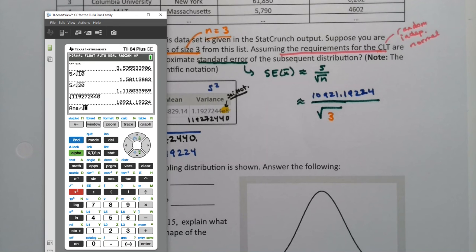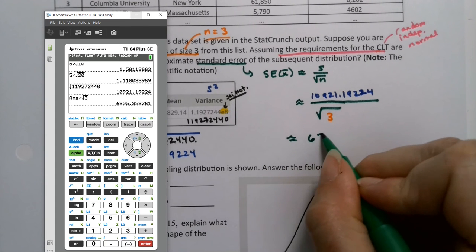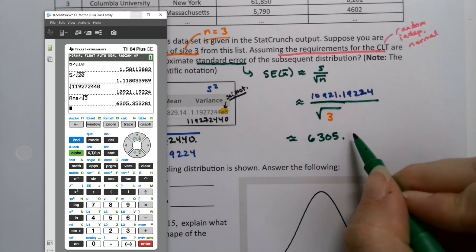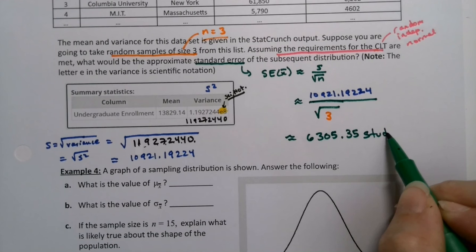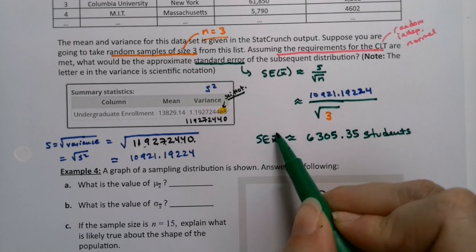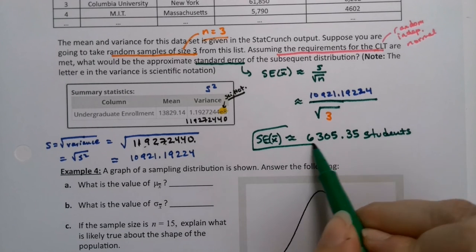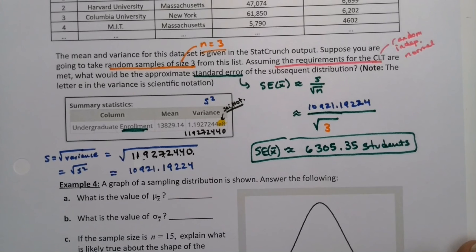So I'm going to take that and divide by the square root of three, and that will be the standard error. Taking my last answer, 10,921 and some change, and I'm dividing it by the square root of three and I get 6,305.35. Now this was undergraduate enrollment, these are the students. So if you want a unit, these are students because it's the enrollment, not the money.